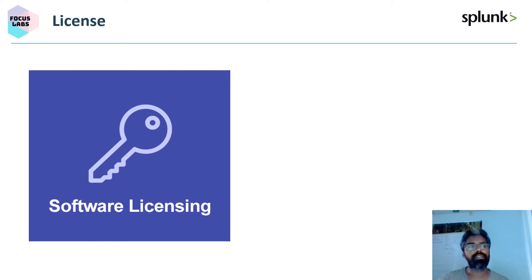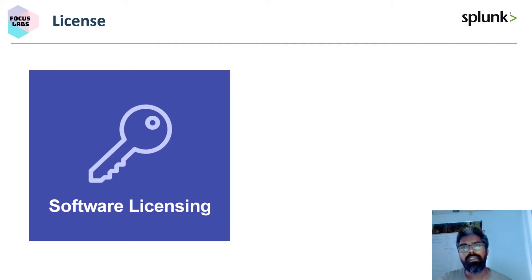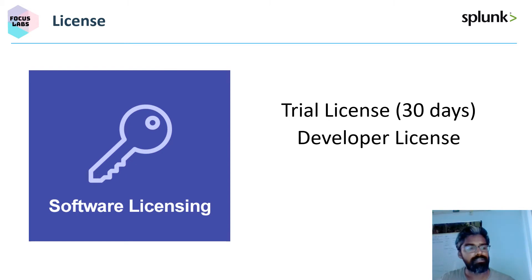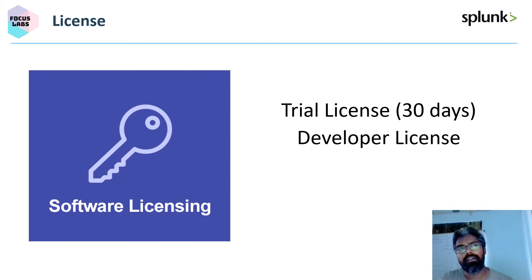Any powerful software tool needs a wide range of licensing options to support developers in trying out the software, as well as for enterprises to evaluate use cases before committing. Splunk offers several licensing options: a trial license of 30 days and a developer license of 180 days. The developer license can be applied by signing into a separate form — I'll try to share the form at the end of the video.